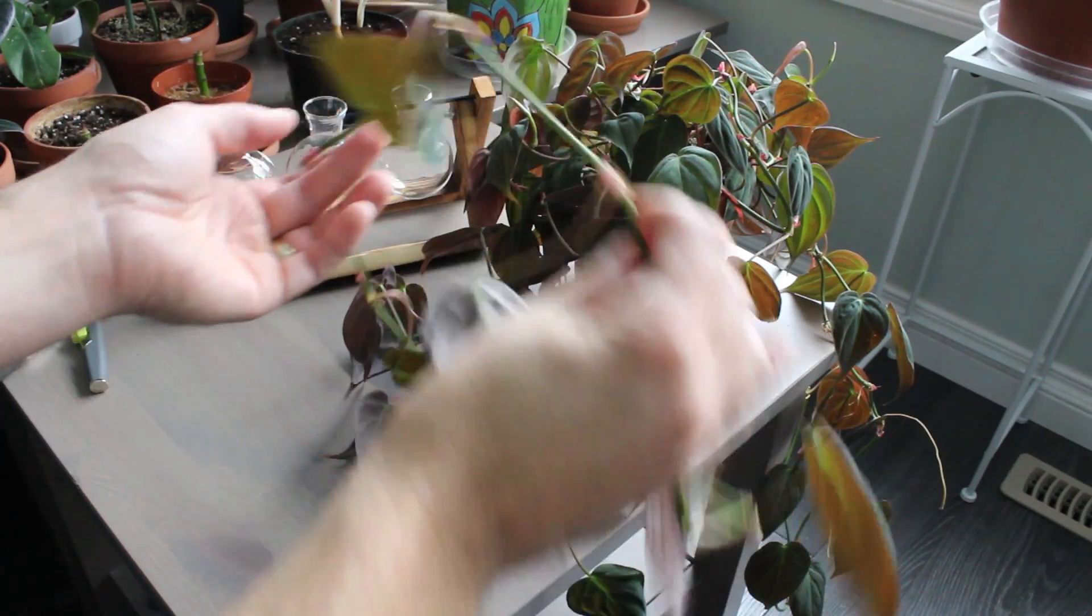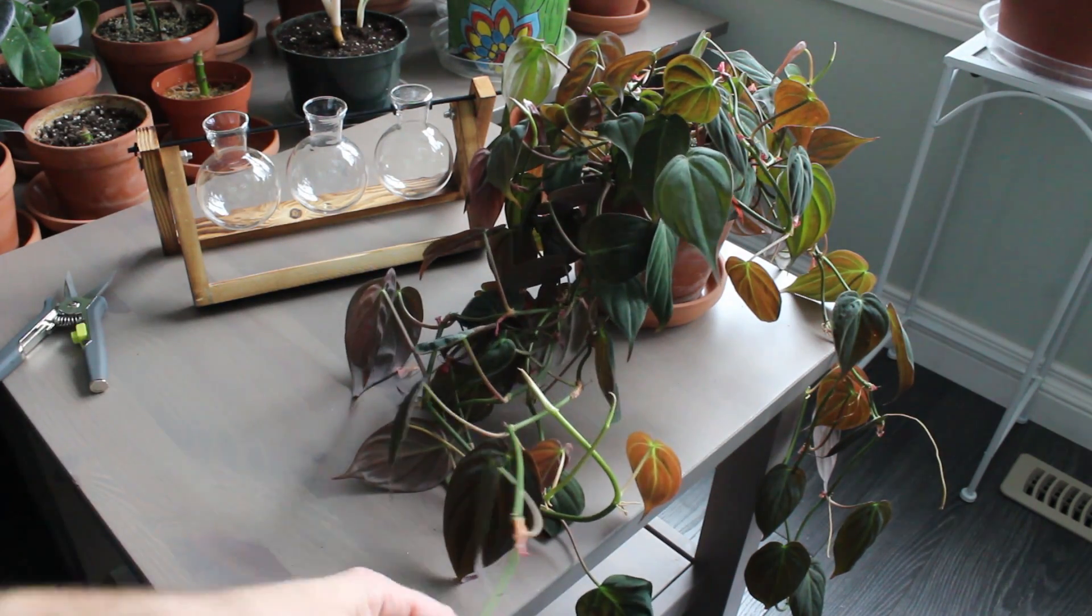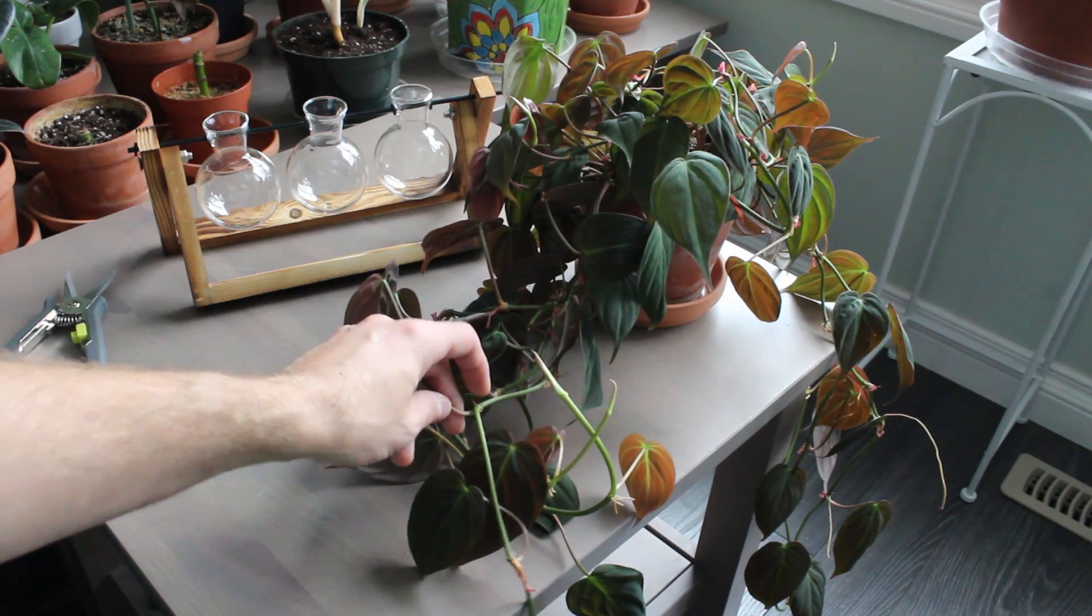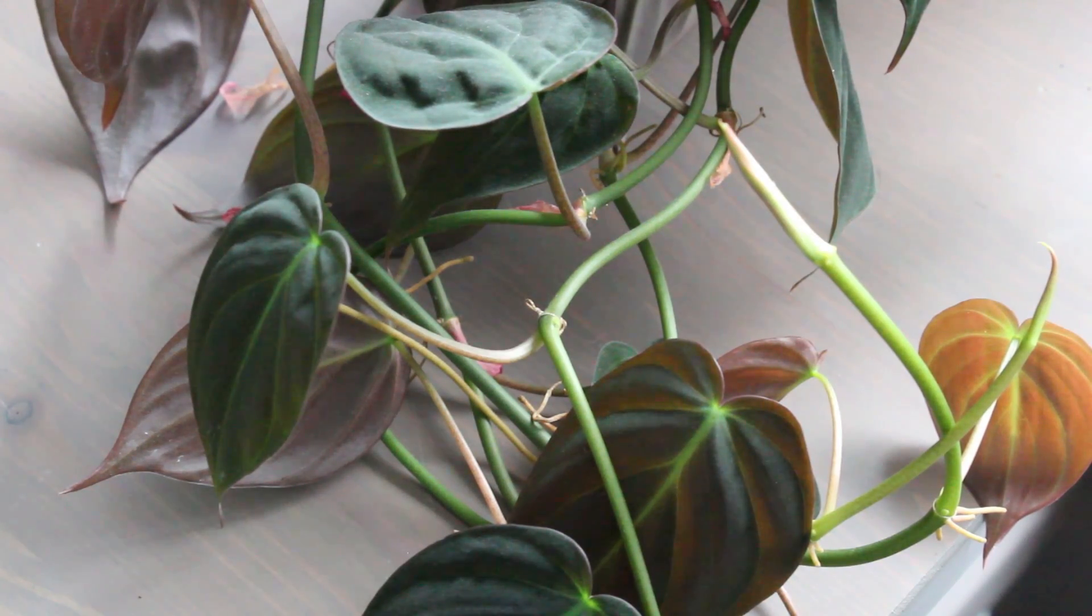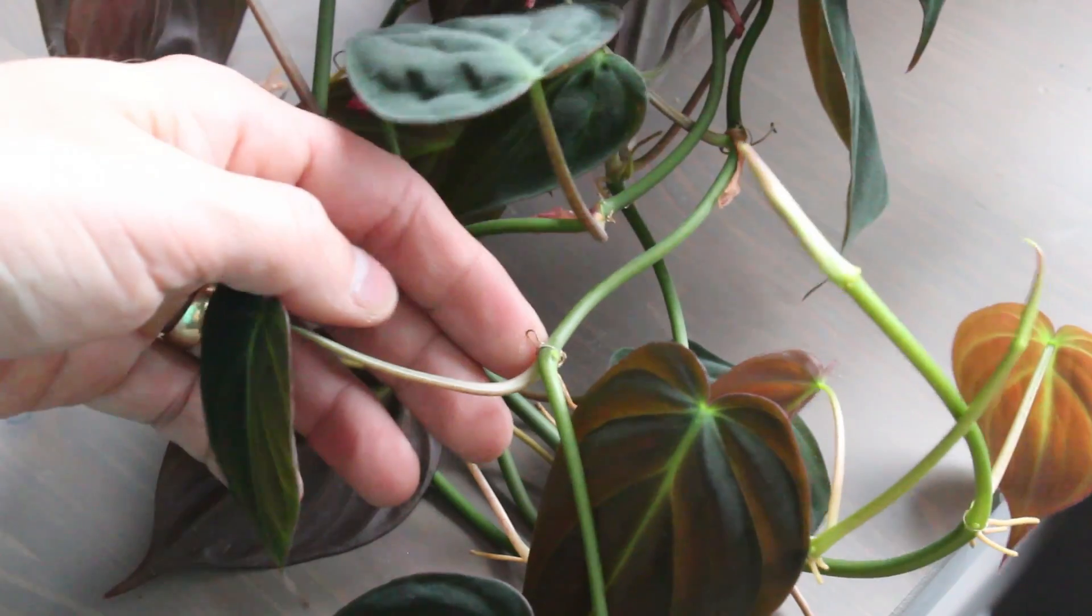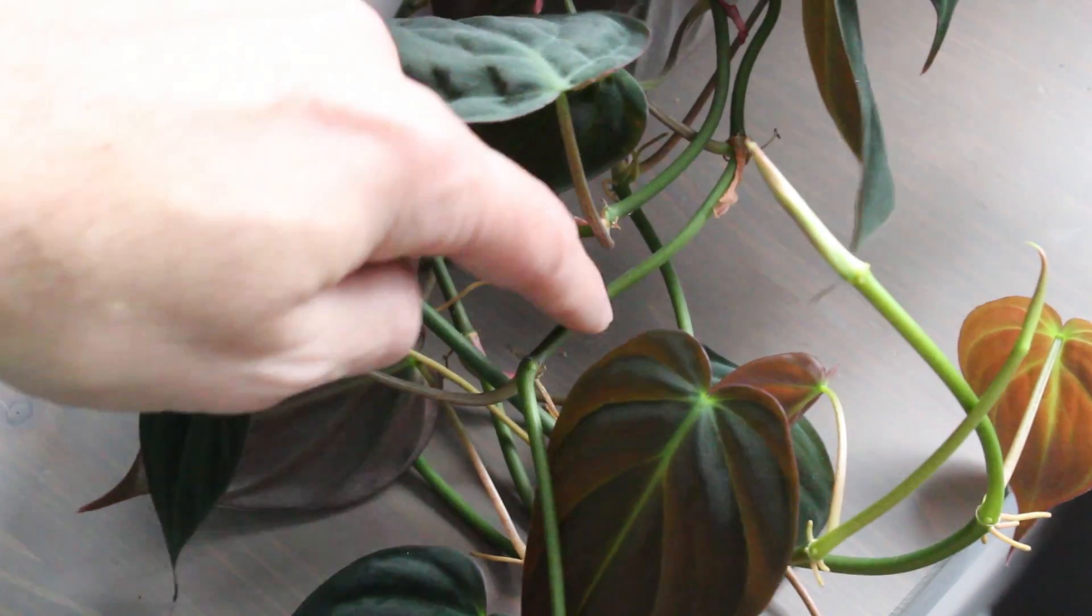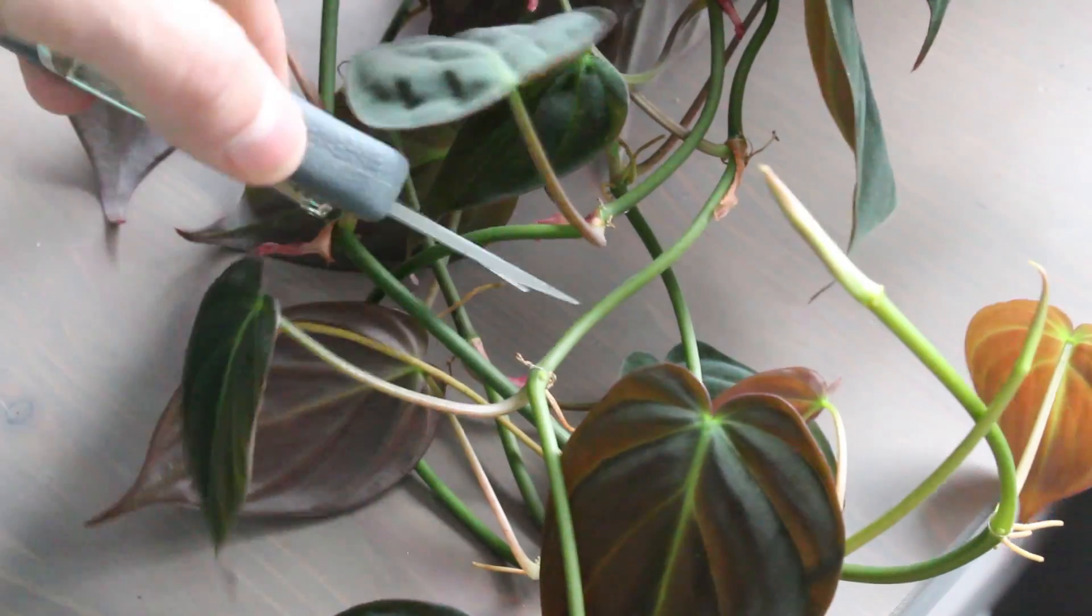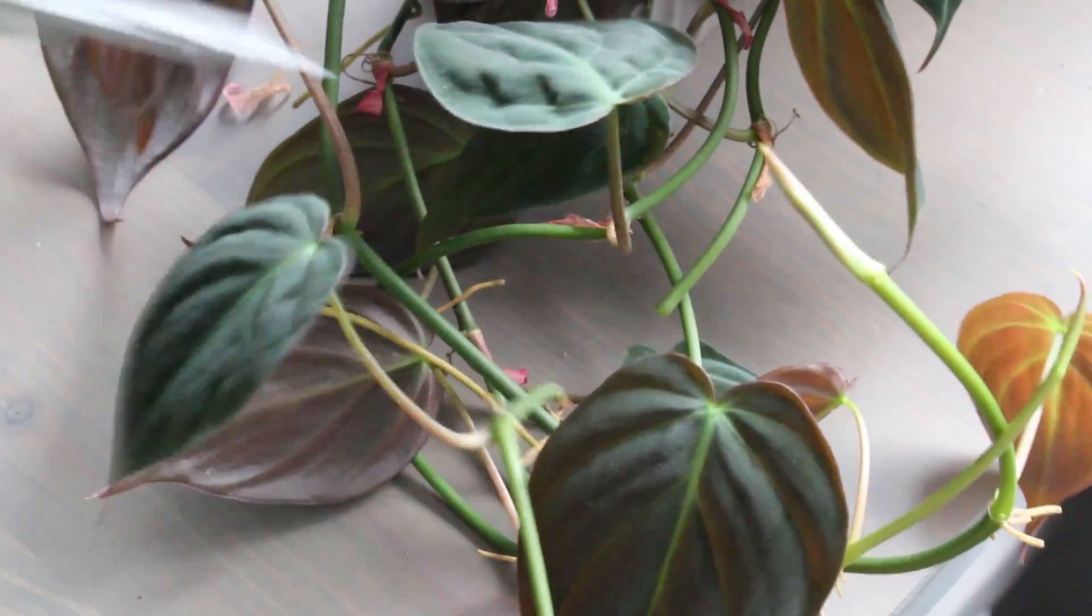I'm going to take the longest strand, reaches all the way down to the floor here, and I'm going to find a leaf node or aerial root section. For this one it is going to be right here. So there's the leaf node aerial root, and I'm going to cut just below that. Take your clean sterile pruning shears and just snip right below that like that.